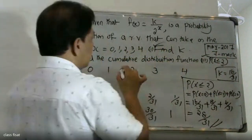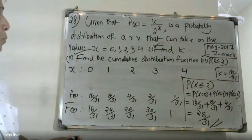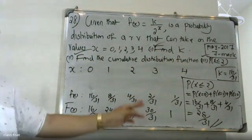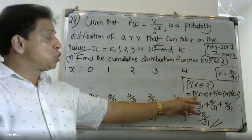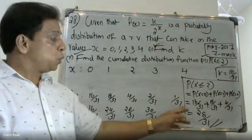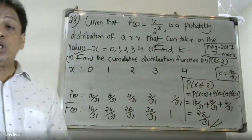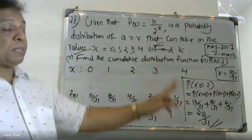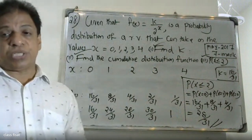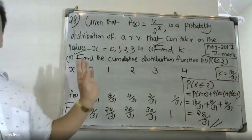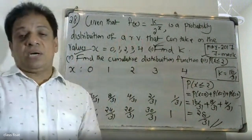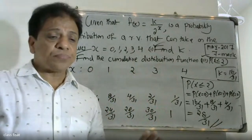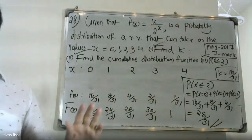Now, to find the probability of x less than or equal to 2. x is less than or equal to 2 means x equals 0, x equals 1, x equals 2. So we compute: probability of x equals 0 plus probability of x equals 1 plus probability of x equals 2. That is 16/30 plus 8/30 plus 4/30 equals 28 by 30. The answer is sigma x px equals 28 by 30.